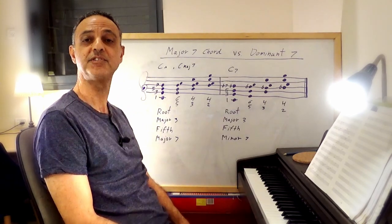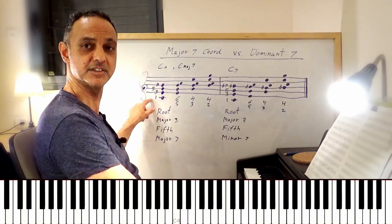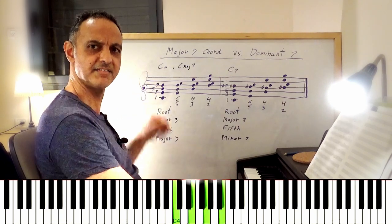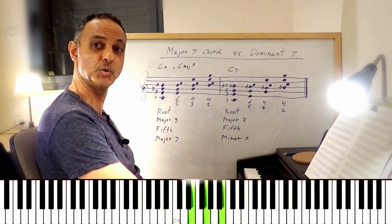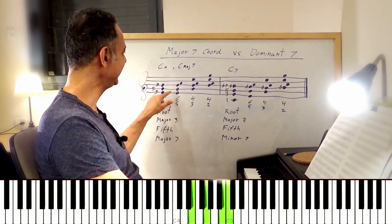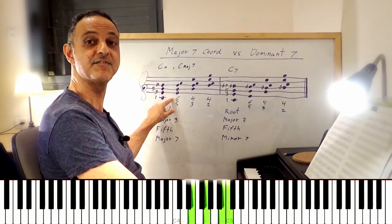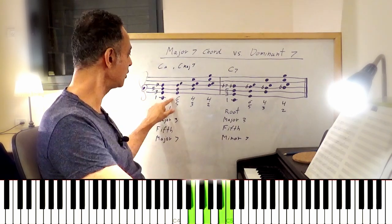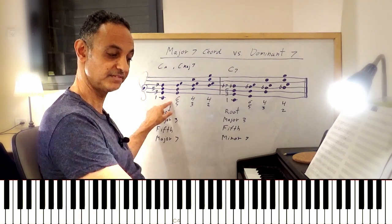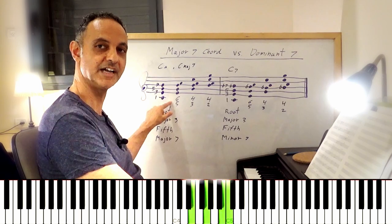Now let's take a look at the inversions of C major 7. Root position is C, E, G, and B. If we take the note C up an octave, we get E, G, B, C — the first inversion, also called 6-5. Then taking the 3rd (E) up an octave gives us G, B, C, E — the 2nd inversion, also called 4-3.